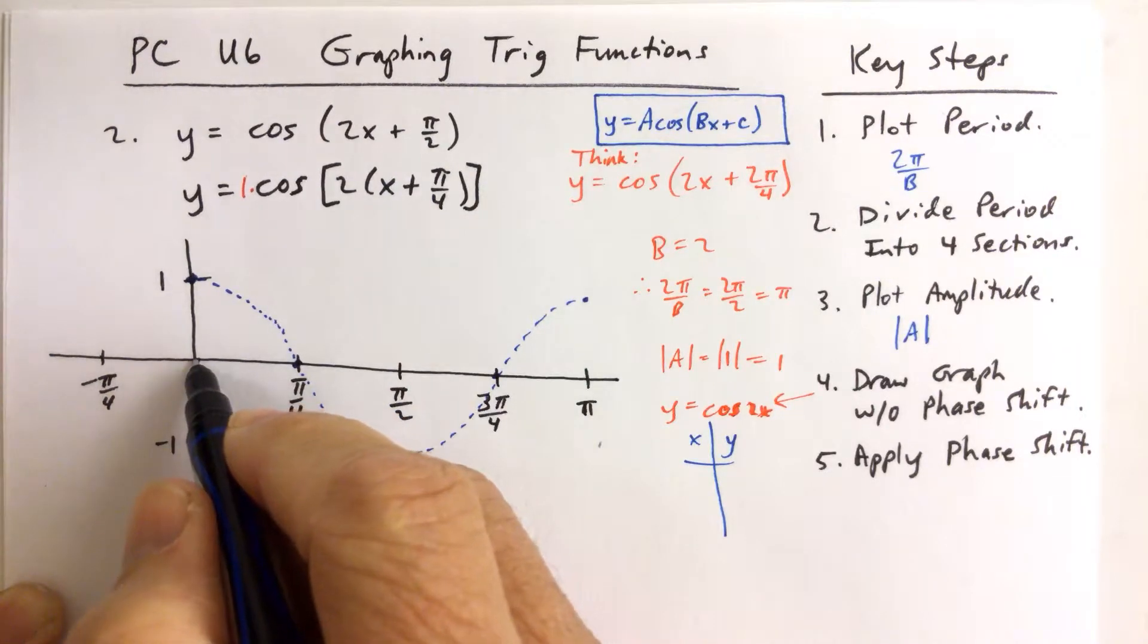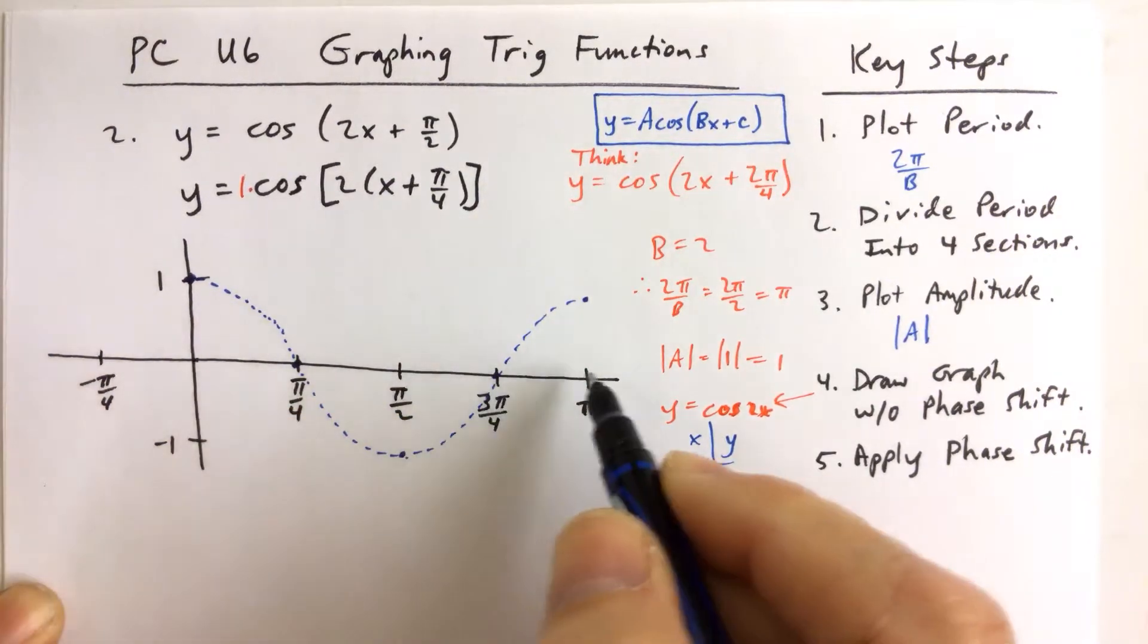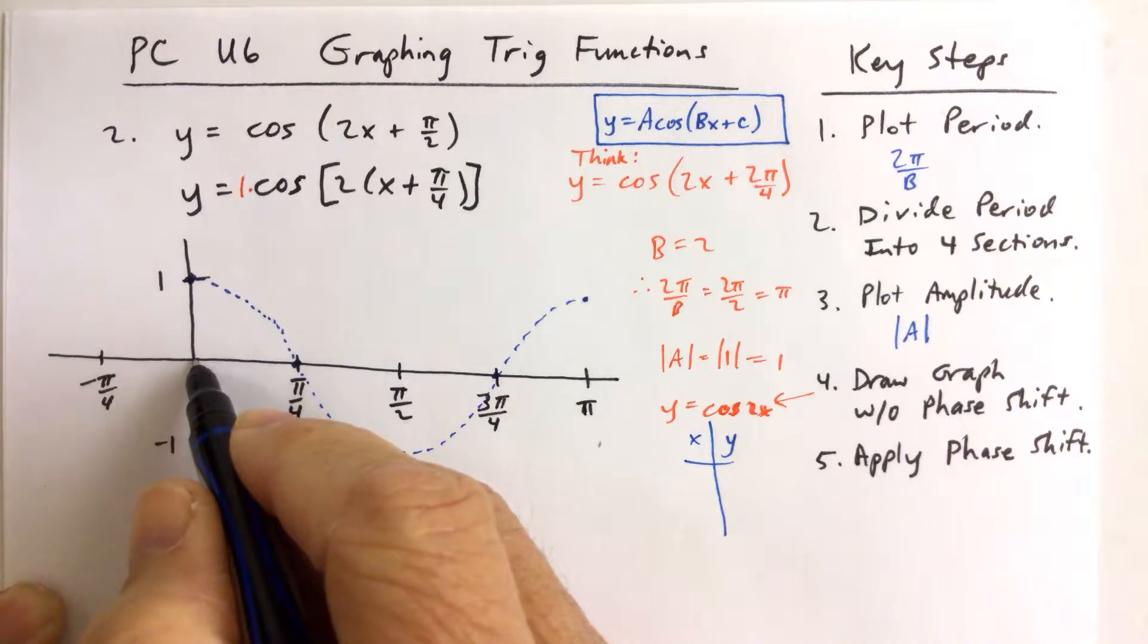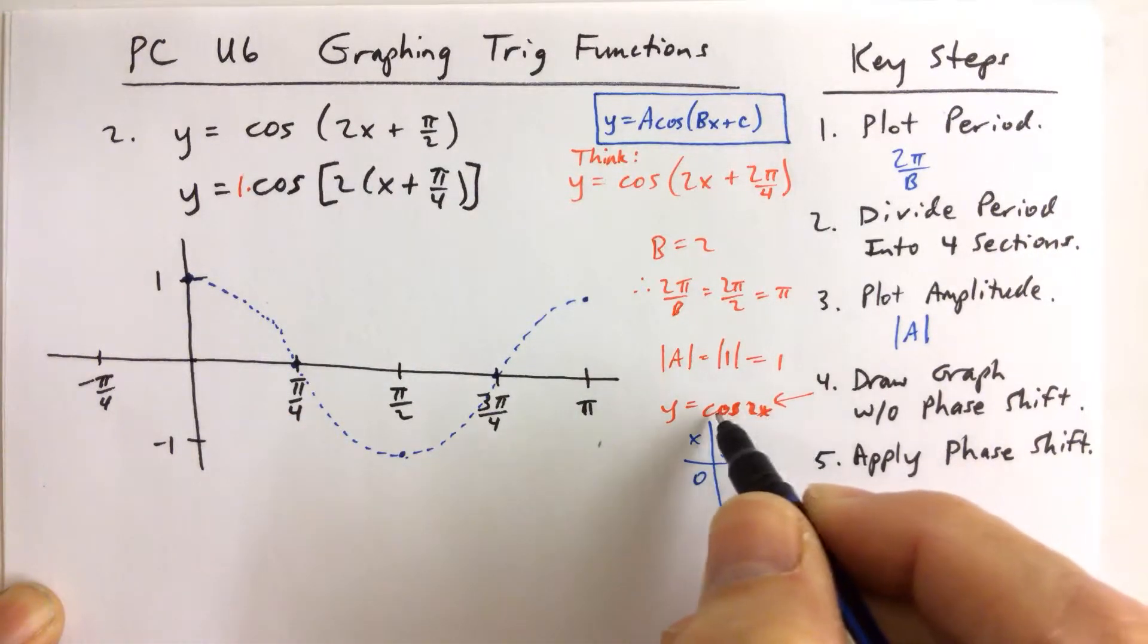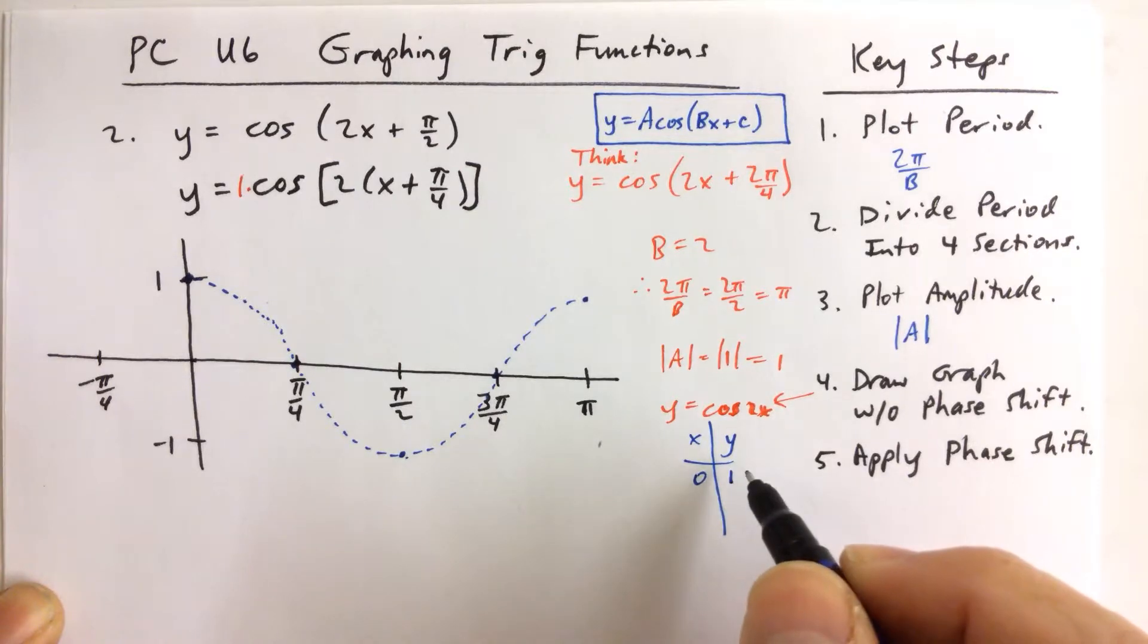You plot your first point here, which is the beginning of your period, 0 to pi. The beginning of the period is 0, so you plug a 0 in for x. The cosine of 0 is 1. So therefore, 0, 1 is on the graph of the function.